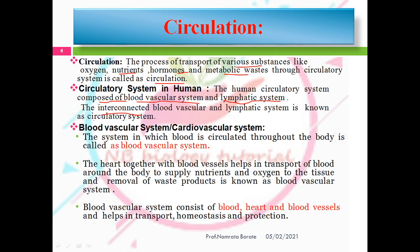The blood vascular system and the lymphatic system are interconnected, and together they form the circulatory system. The blood vascular system is also called the cardiovascular system. It is the system in which blood is circulated throughout the body. The heart, together with blood vessels, helps in the transport of blood to supply nutrients and oxygen to tissues and remove waste products.